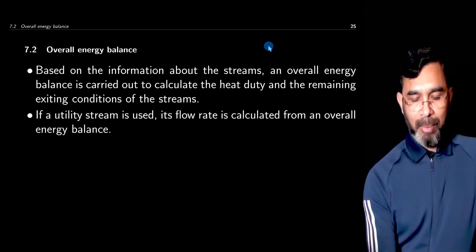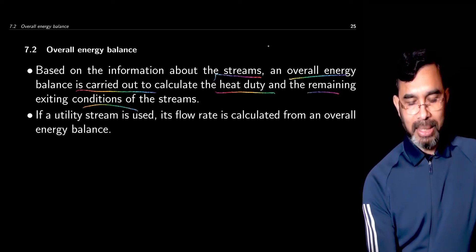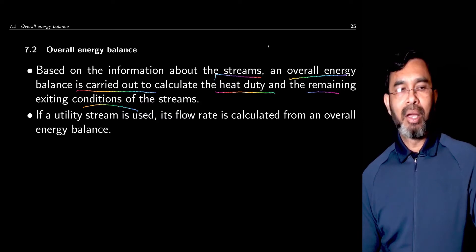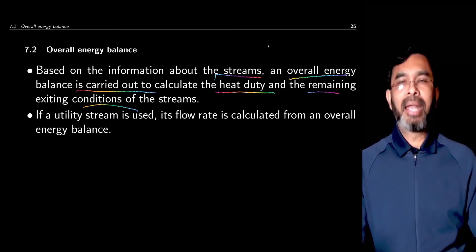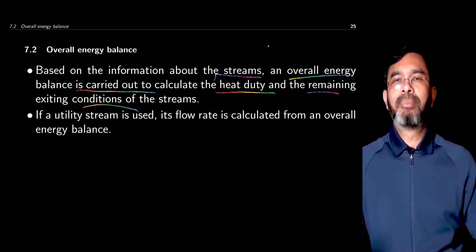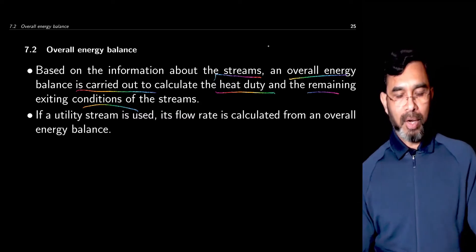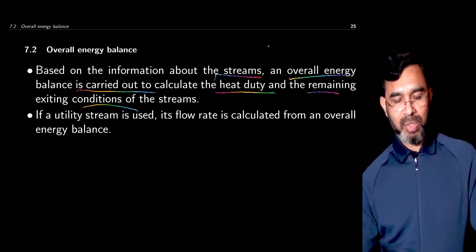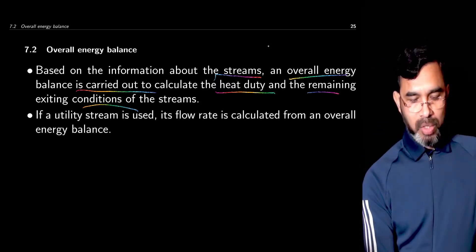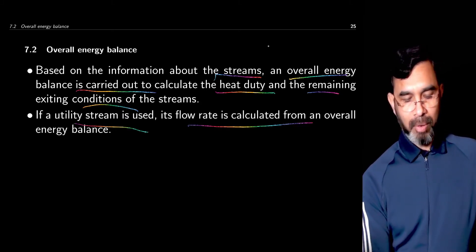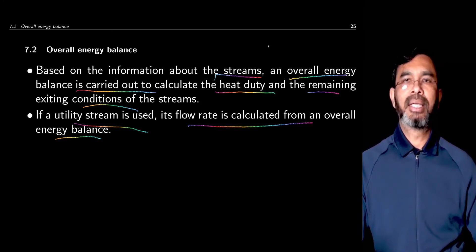Based on the information about the streams, an overall energy balance is carried out to calculate the heat duty and the remaining exit conditions of the streams. We cannot define all the flow rates and temperatures arbitrarily. If both flow rates are given and three of the four temperatures are given, the other becomes fixed. Or if you know the inlet and outlet temperatures of both streams, then the flow rate of one stream is fixed relative to the other, since heat given by one stream is taken by the other. Also, if a utility stream is used, its flow rate is calculated from an overall energy balance.